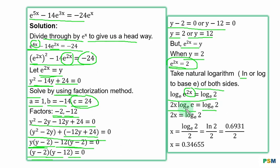When the number and the base are the same, the result is 1. So log_e(e) = 1 times 2x. You have 2x = log base e of 2.